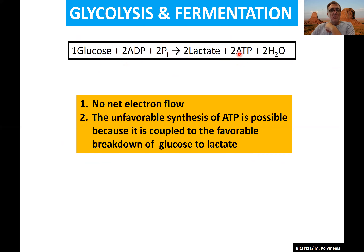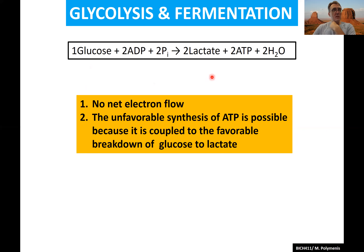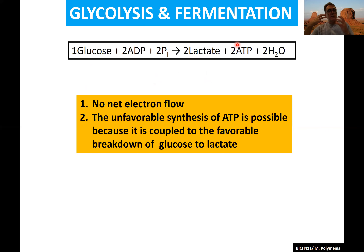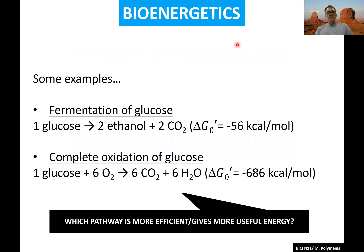When you couple glycolysis and fermentation together there is no net electron flow — you don't see NAD⁺ or NADH anywhere anymore. The thermodynamically unfavorable synthesis of ATP is made possible by coupling it to the favorable breakdown of glucose to two three-carbon lactate units. You capture the available free energy to build up your energy currency in the form of ATP — this recapitulates the metabolic principles we discussed in the introduction.